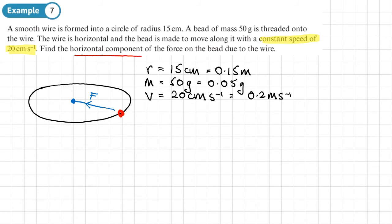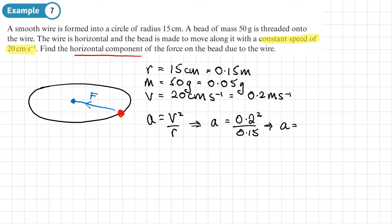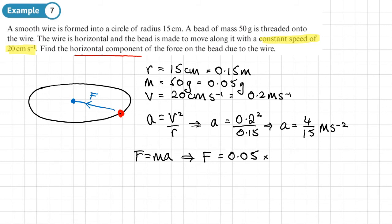Since we have the linear speed, the acceleration equals V squared over R. So A equals 0.2 squared over 0.15, which gives 4 over 15 meters per second squared. Using F equals MA, the horizontal force F equals 0.05 times 4 over 15, giving 1 over 75 newtons.